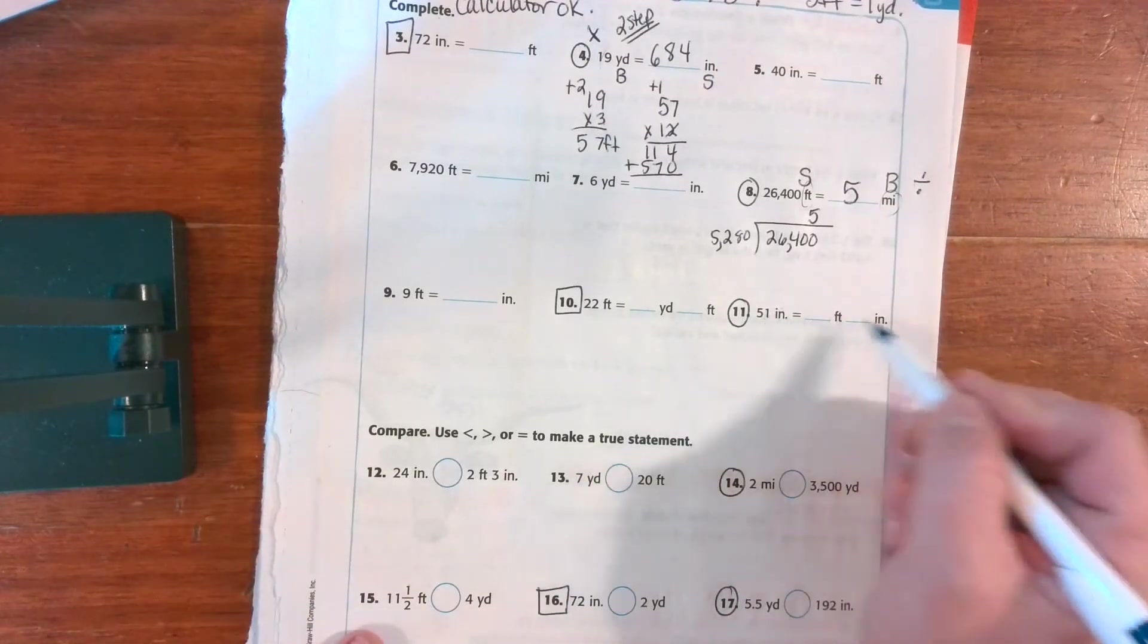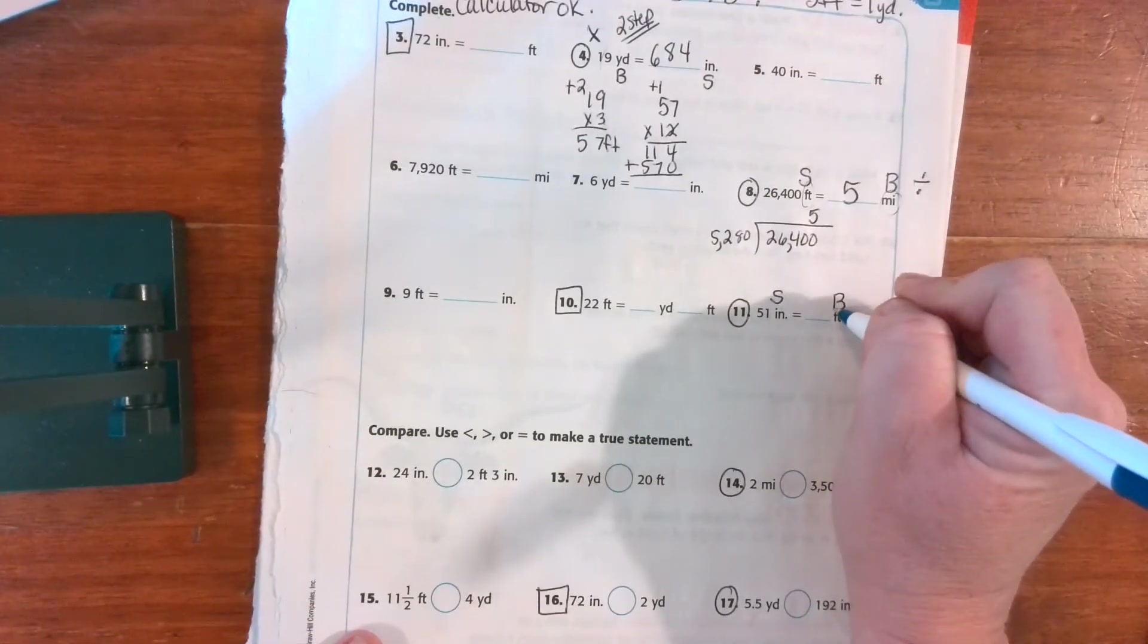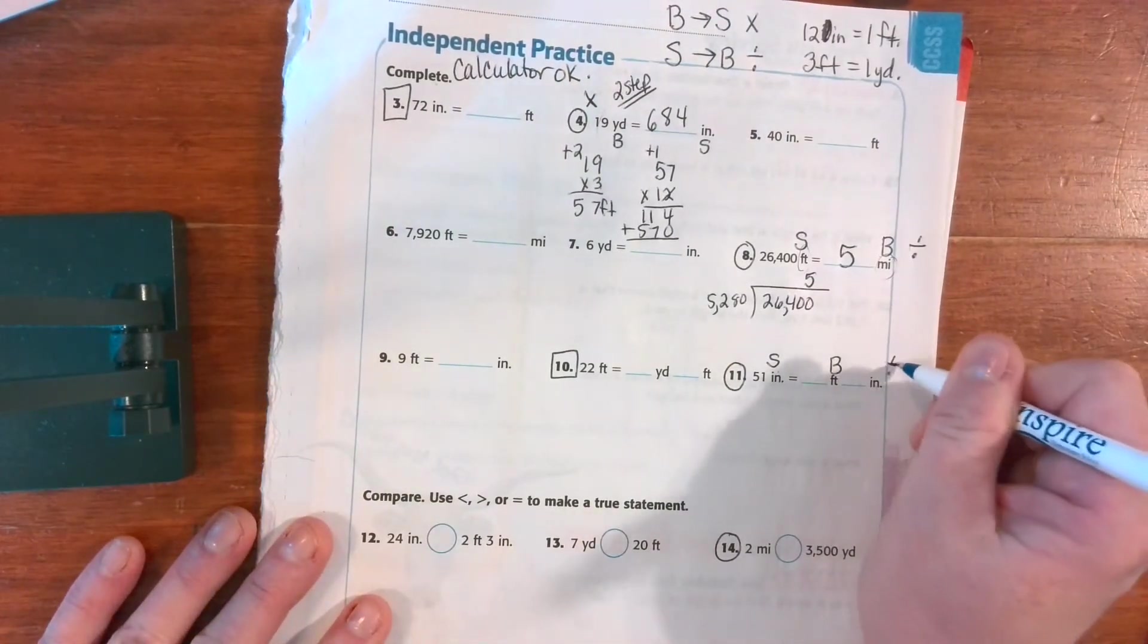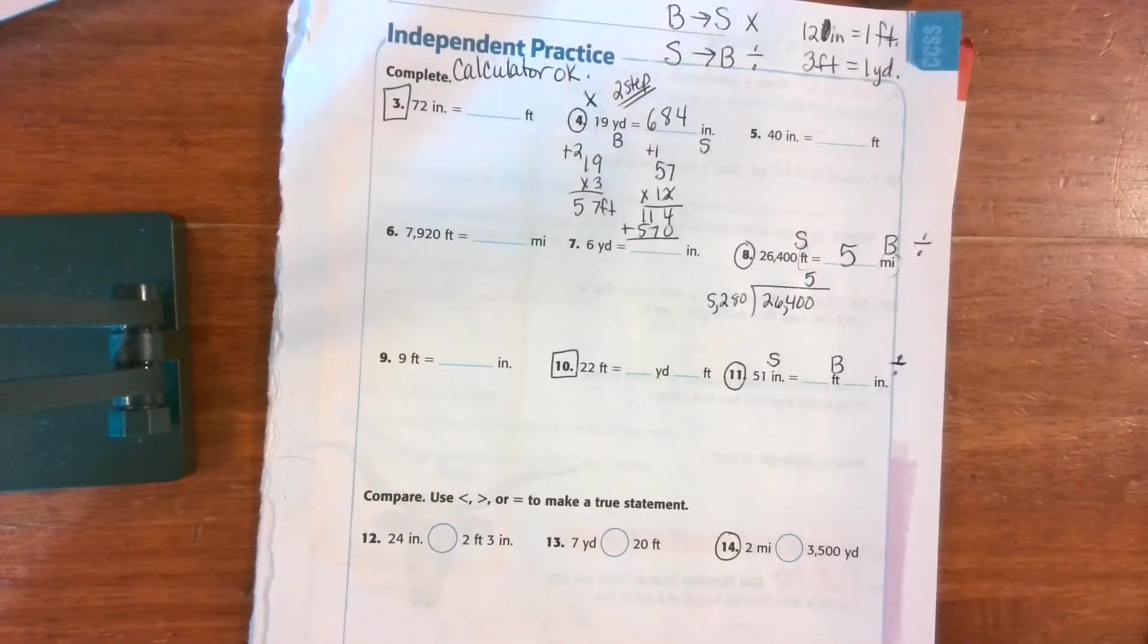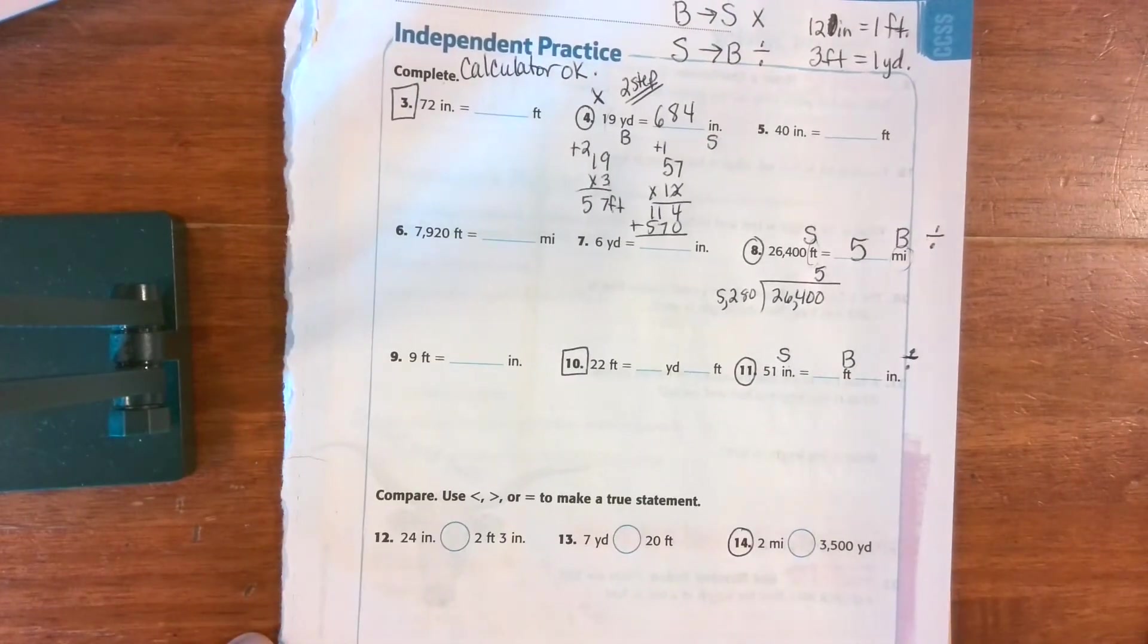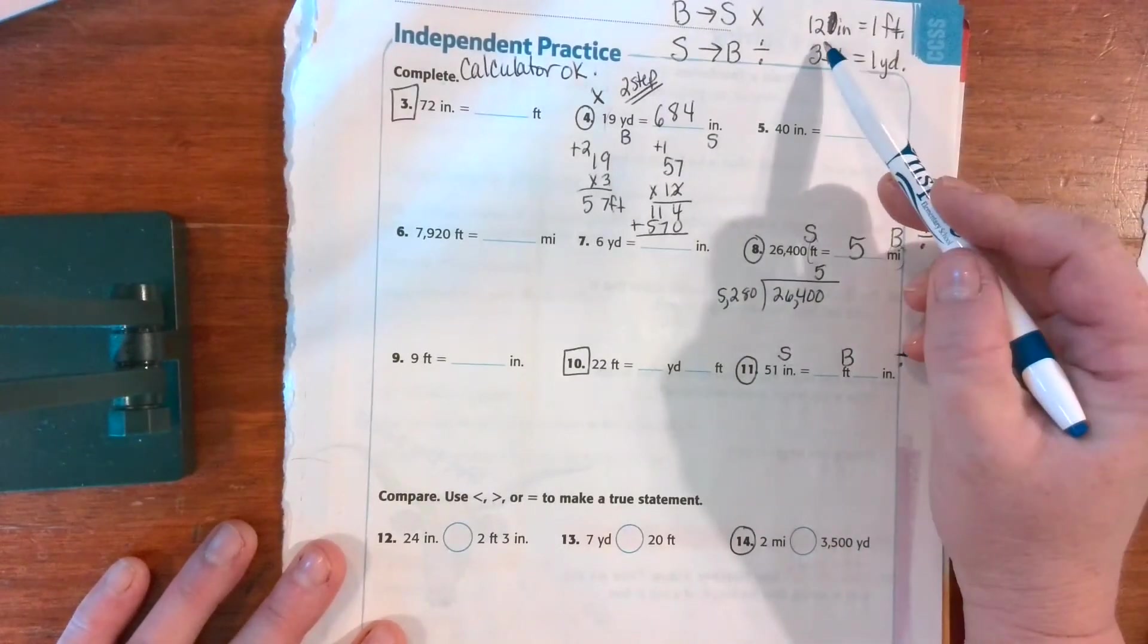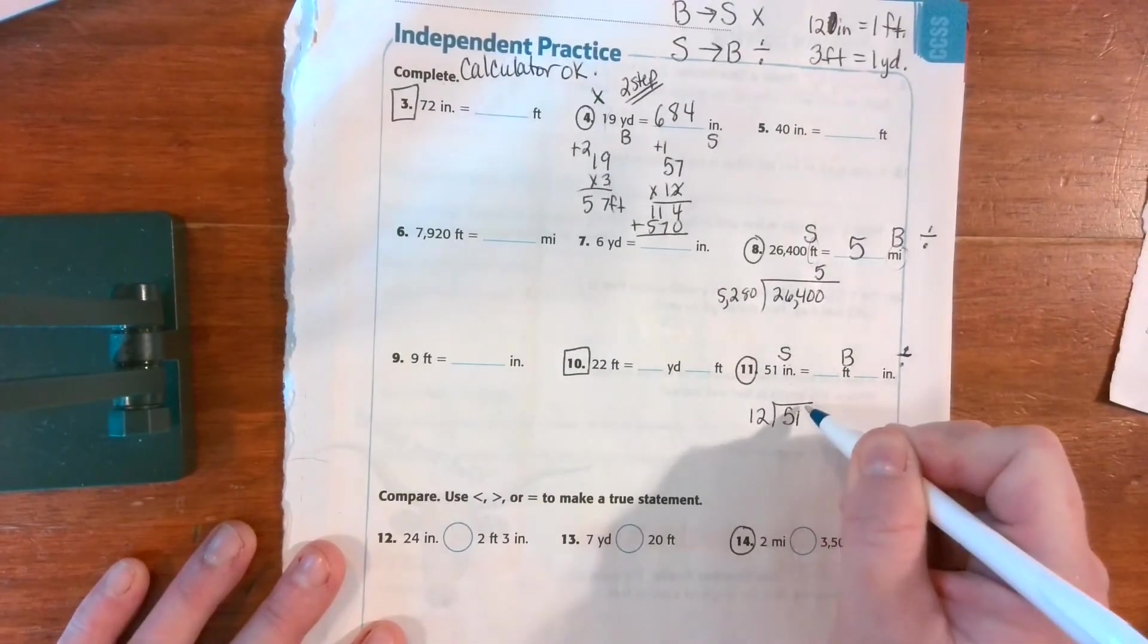All right, inches to feet. Small to big, which means I'm going to divide because I need fewer of these bigger ones. As always, I hope you're starting to see a real method to how I solve these. If you can internalize these steps and do the same steps every time, it'll go really fast. So if I'm going to divide and I'm going inches to feet, I'm going to find my formula that has inches to feet, and it says 12. So 51 divided by 12.